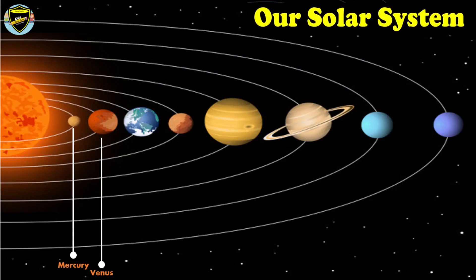The third planet in the solar system is Earth. It is the planet in which we all live. Earth is also called blue planet.